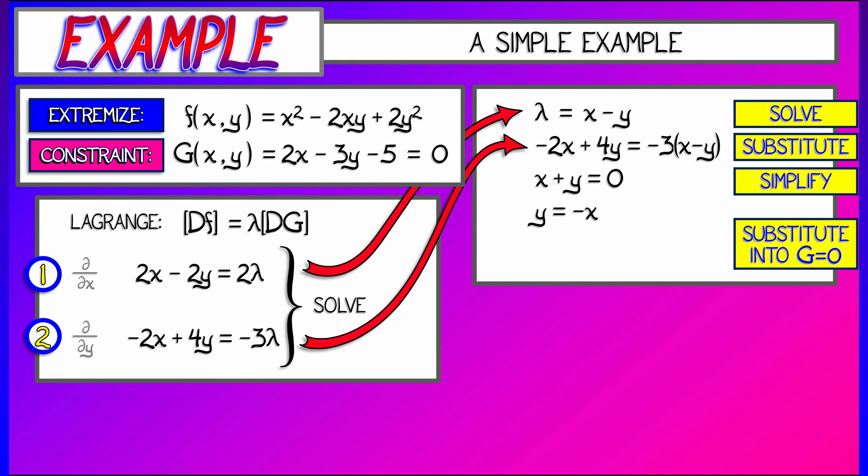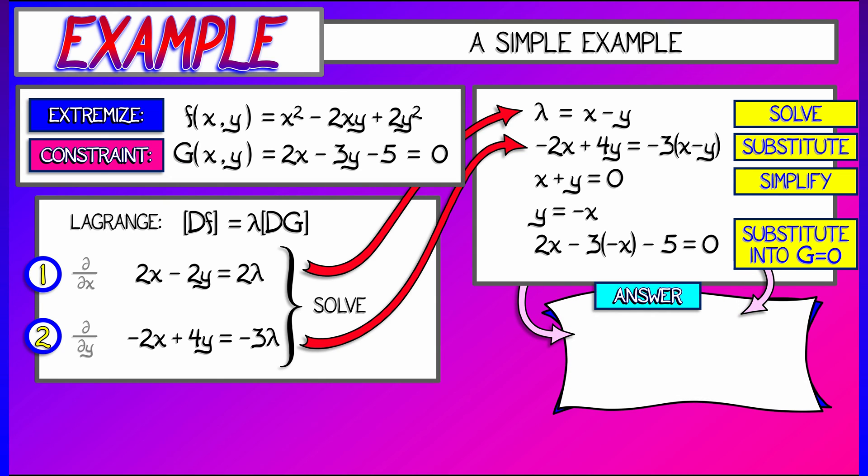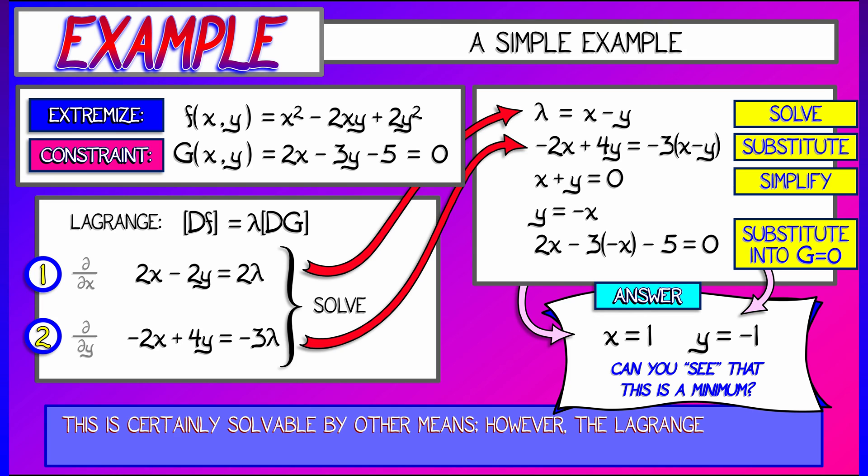And now, don't forget this. Substitute that back into the constraint g equals 0 to obtain 2x minus 3 times quantity negative x minus 5 equals 0. That is a simple answer. x has to be equal to 1. That means y has to be equal to negative 1. And you can plug that into f to see what the value is. Take a moment, convince yourself that this is really a minimum of this function subject to this constraint.